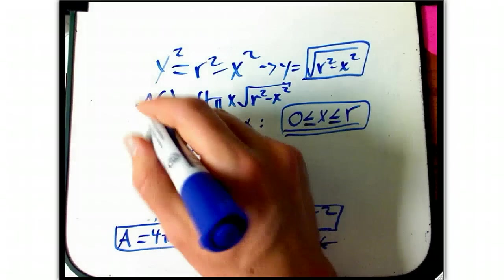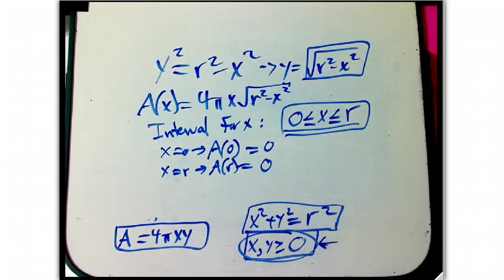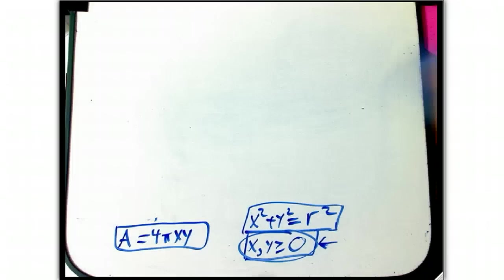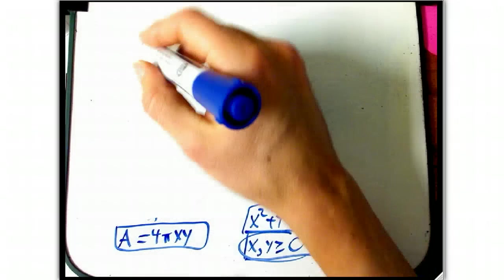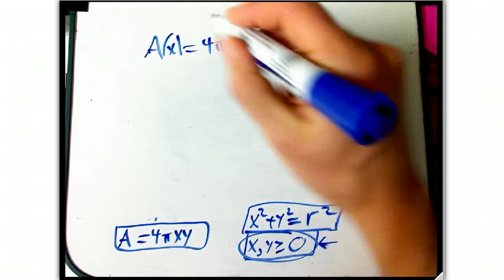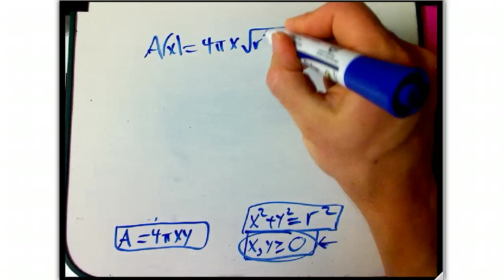Okay, so all right, now we're going to need to take the derivative of that, and I think I just need to redraw. The great thing is you can always rewind, so don't be afraid to rewind. Okay, so let me write A of X one more time, a little higher this time, 4 pi X root R squared minus X squared.